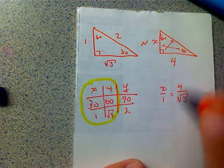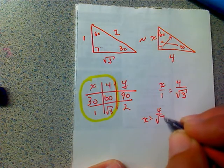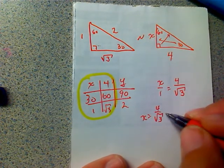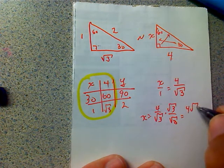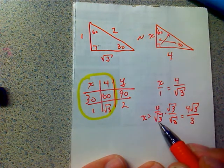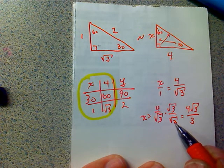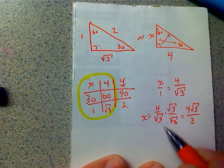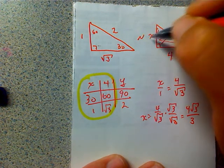So there it is, x over 1. That's already what x is. x is 4 over the square root of 3. But I have to rationalize it. So that's 4 square root of 3 over square root of 3 times square root of 3 is 3. And square root of 3 times square root of 3 is square root of 9. Square root of 9 is 3. So this side is 4 root 3 over 3.